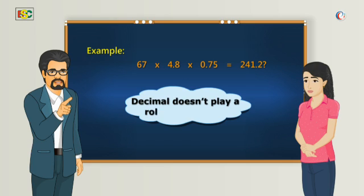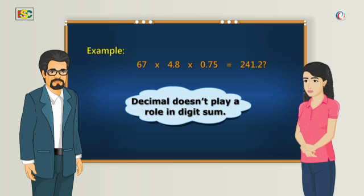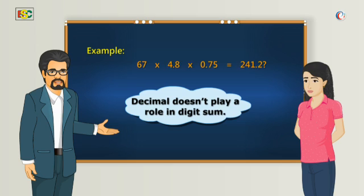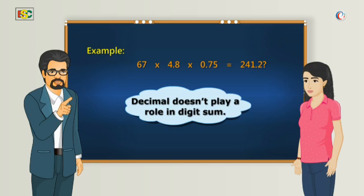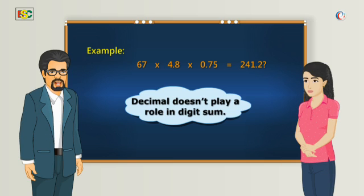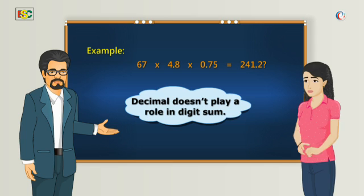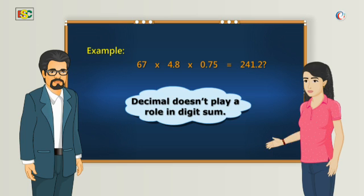Baba, decimals, is there any difference in calculation of digit sum in case of decimals? No, Vidya, decimal doesn't play a role in digit sum. In fact, we can check the validity of digit sum for any number of multiplicands. So, whenever we need to calculate digit sum involving decimal numbers, we just ignore the decimals.